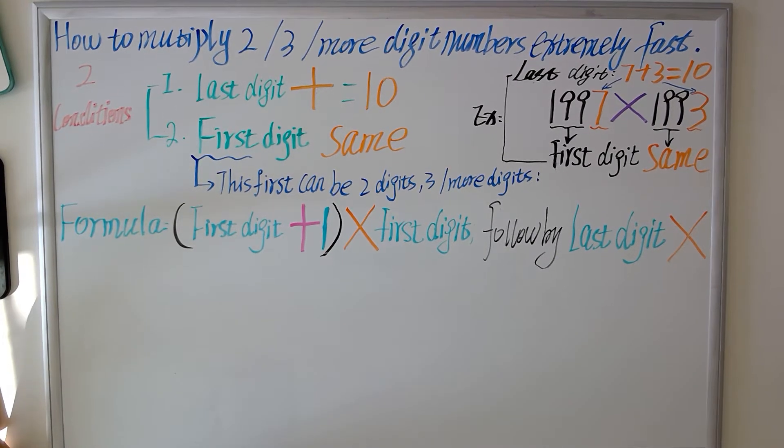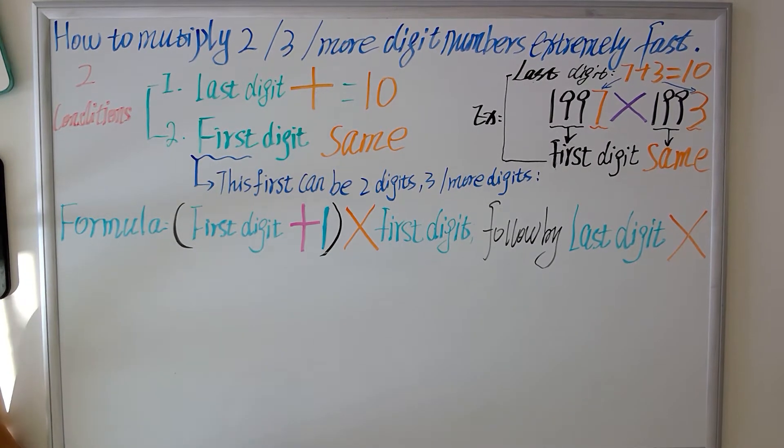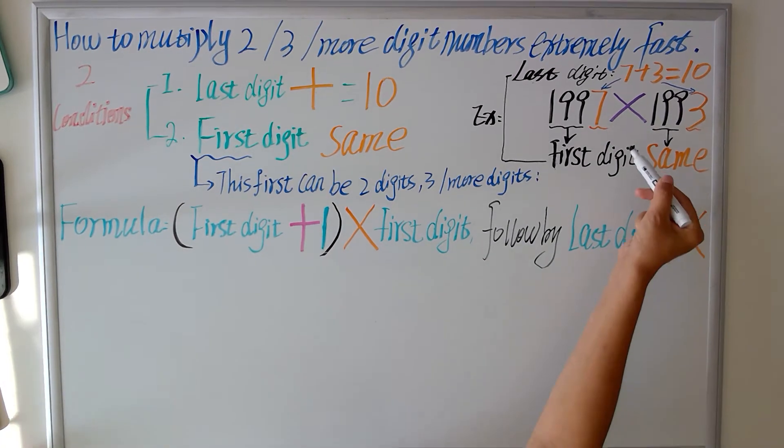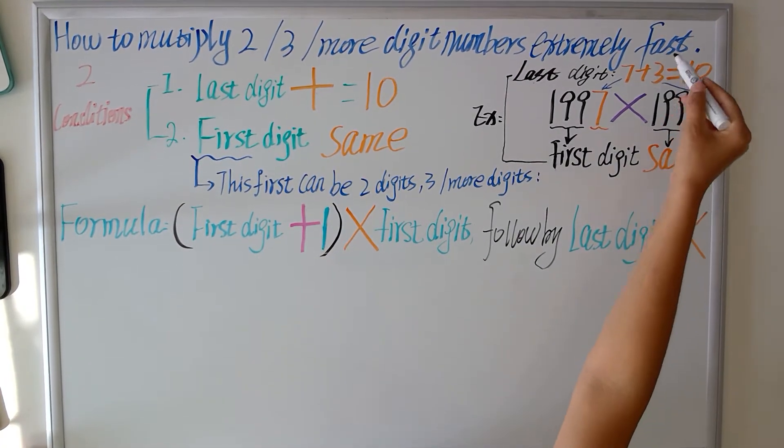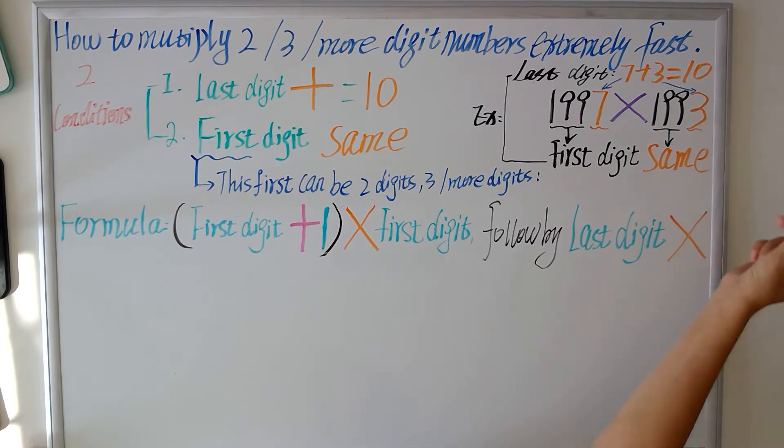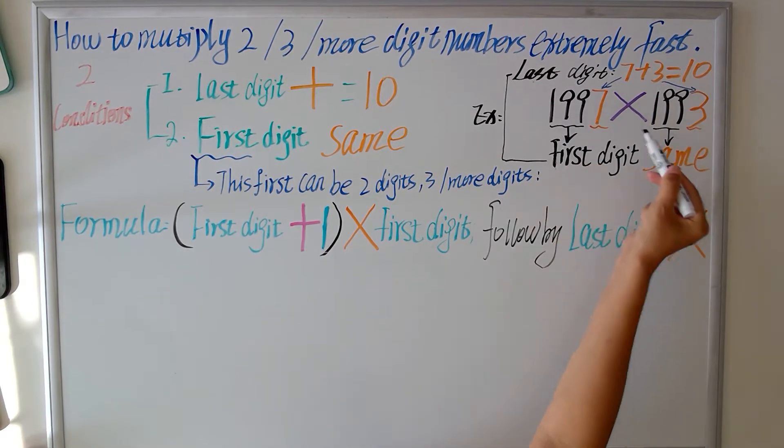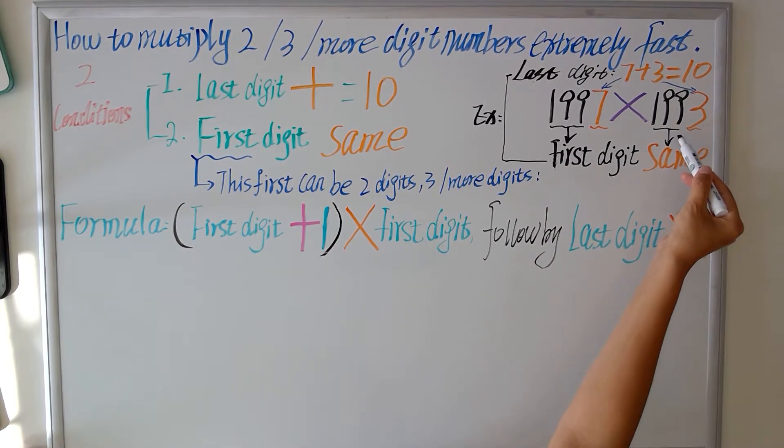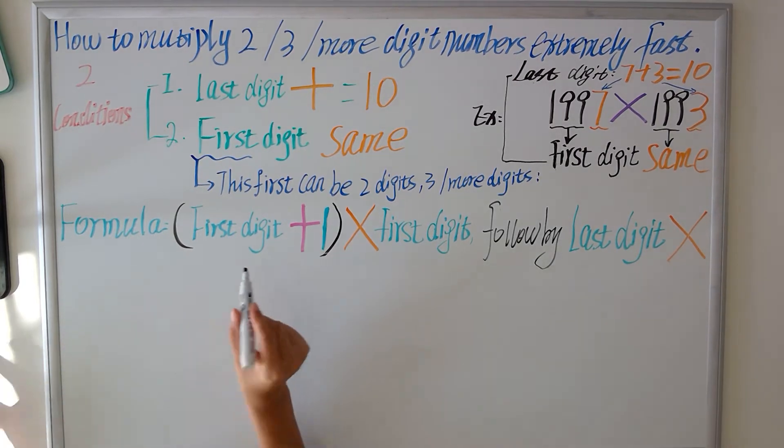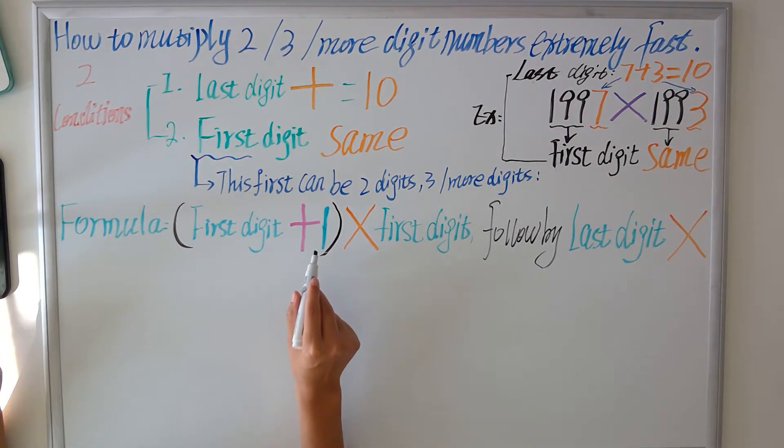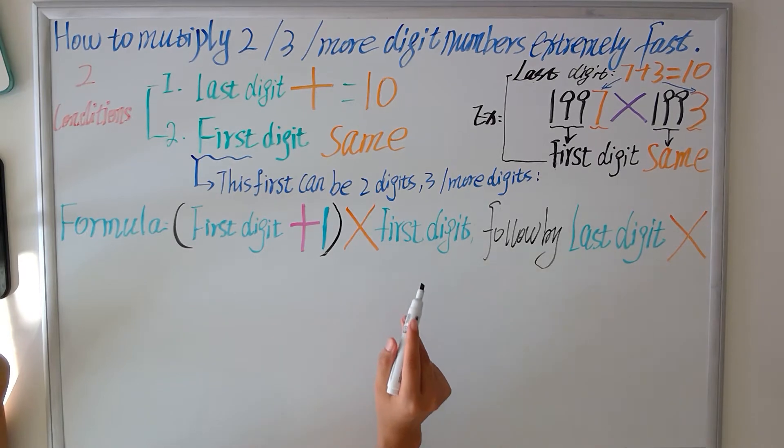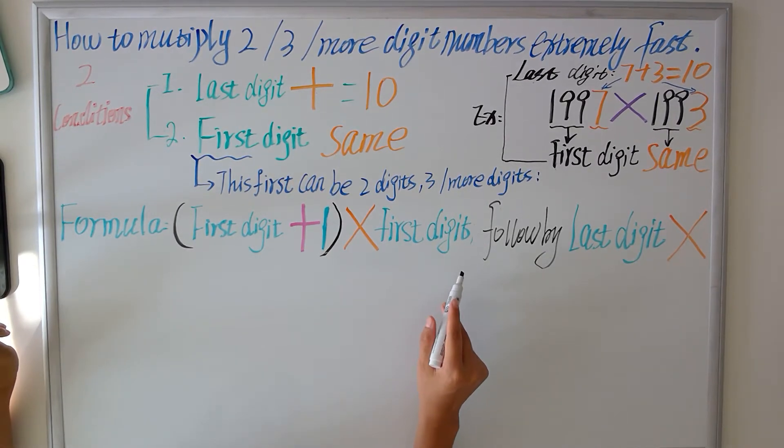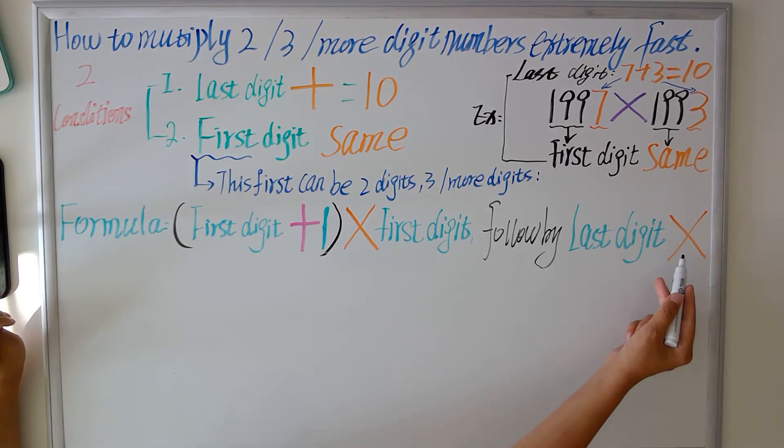So in this case, I have two conditions. First, last digit plus equal 10. The second is first digit number same. Now we use the formula: first digit plus one, bracket, multiplied by first digit, followed by last digit multiplier.